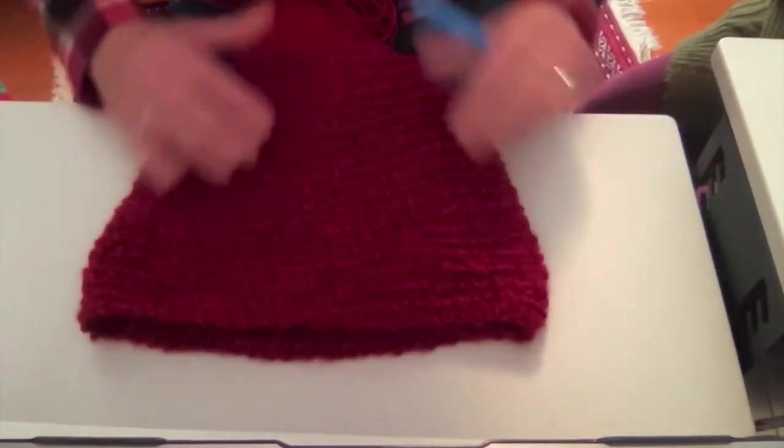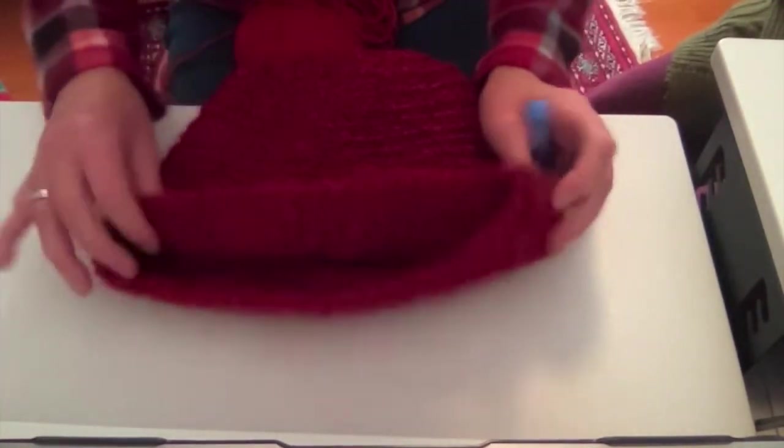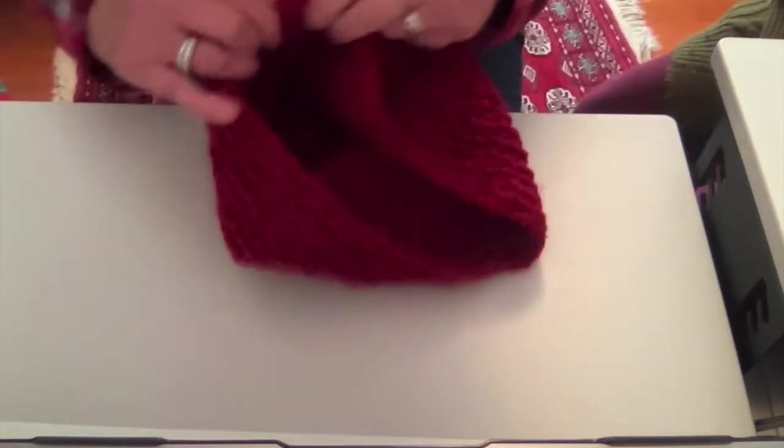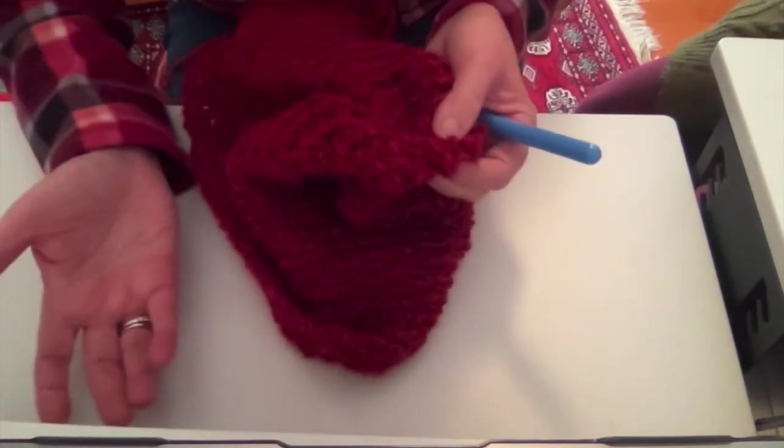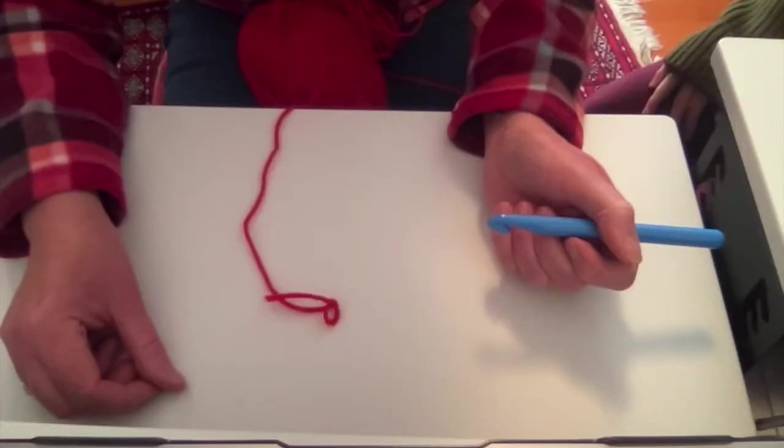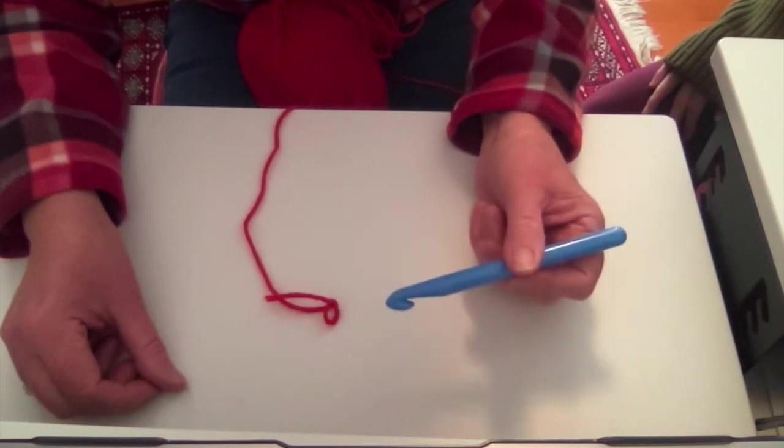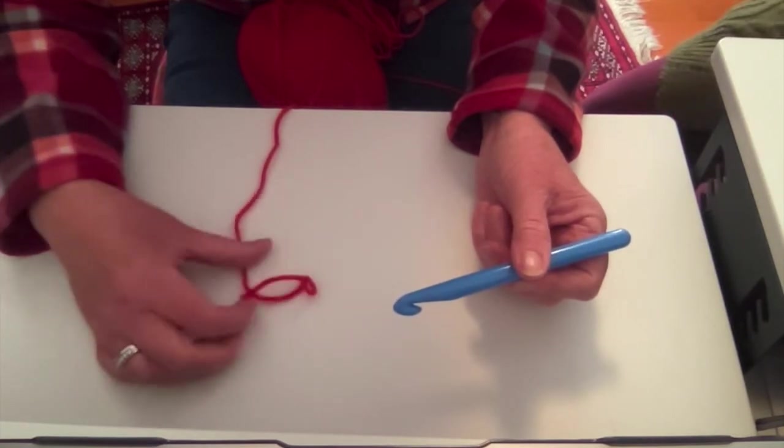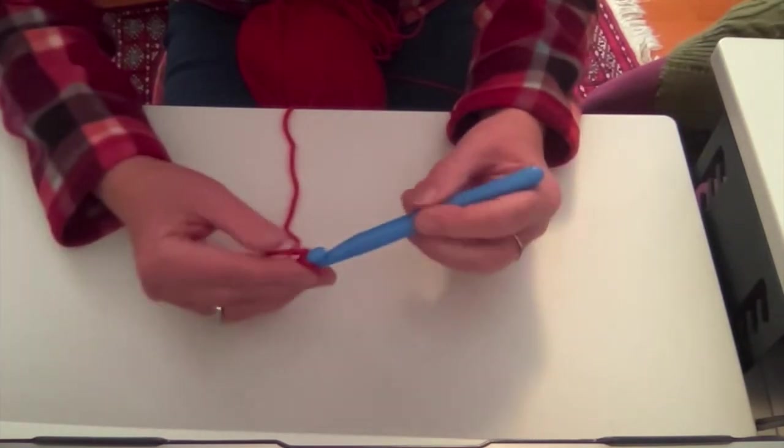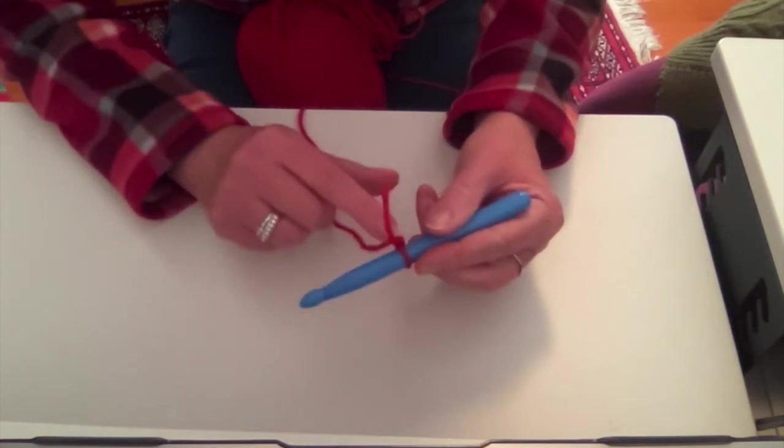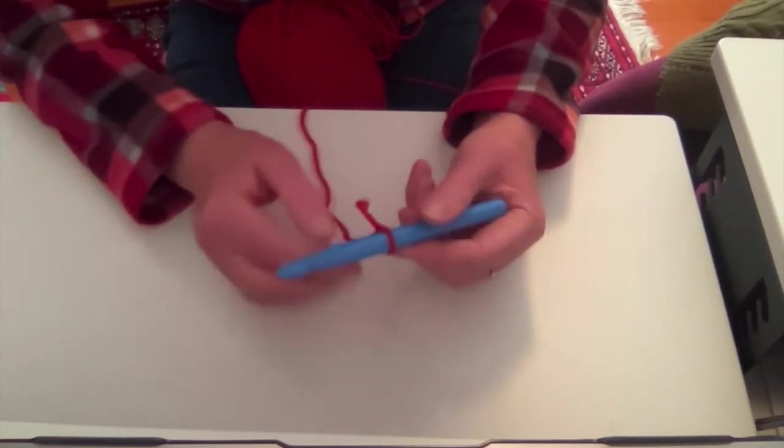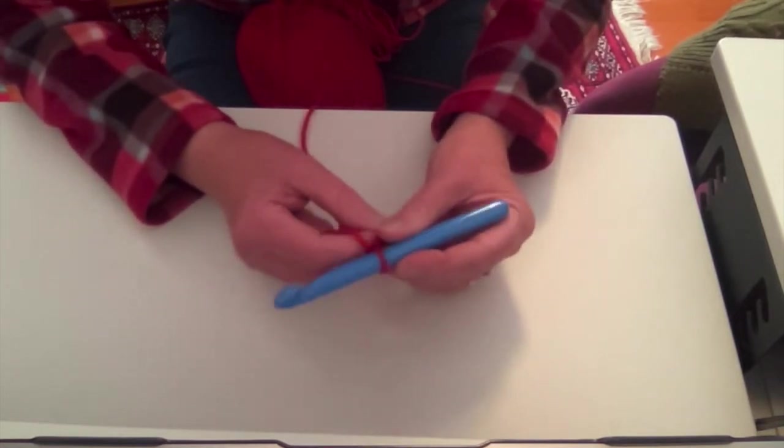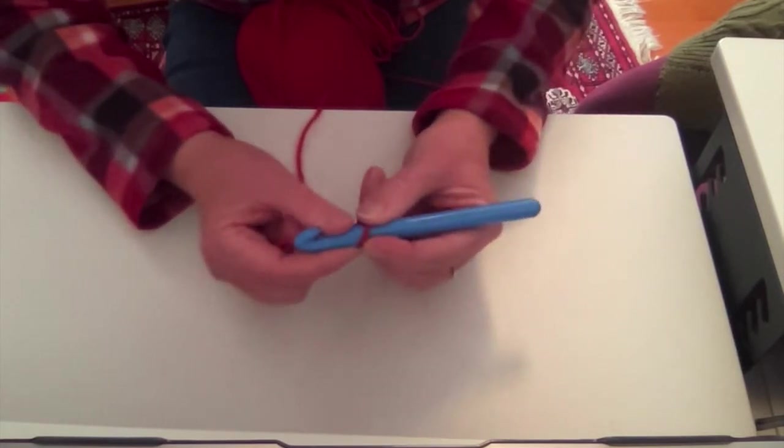All right, this time we're going to start a beanie. And if you notice, it's just a circle around and around and around and around until you get to the very top. And that's where it ends. So for the beanie, once again, you want to start with your medium-sized hook and your thin yarn. And again, you want to make sure you knot that knot so that it fits the size of the hook. And you start it again just the way you did your square.